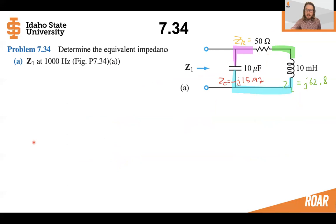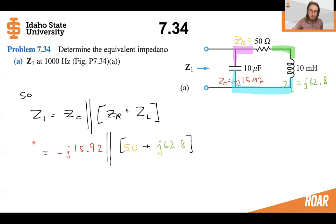Now that we know the impedance of each one of these, let's take a look. We can see that the capacitor is going to be in parallel with the resistor and the inductor when we analyze this to find the equivalent impedance Z1. We can write this as the capacitor is in parallel with the impedance of the resistor plus the impedance of the inductor quantity.